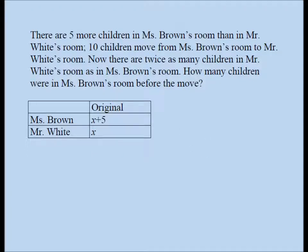So we're going to construct a table. Then what happens? Ten children move from Ms. Brown's room to Mr. White's room. So what happens is you subtract the new scenario. This is the original scenario. And the new scenario is you subtract ten from here and add ten to this.